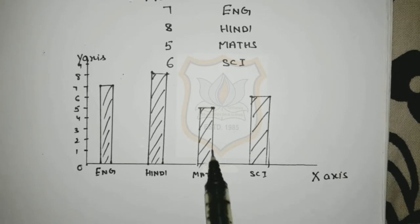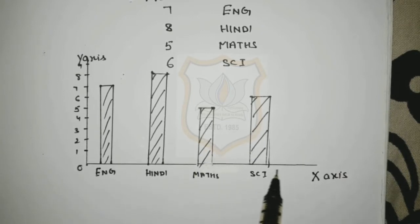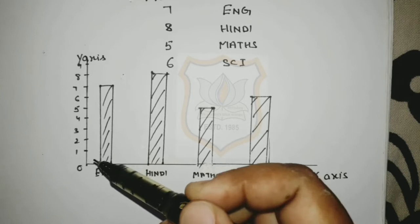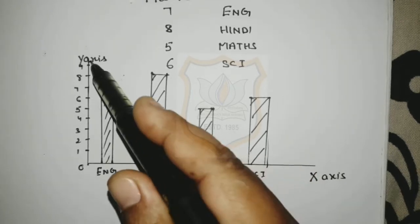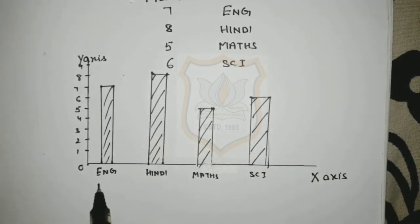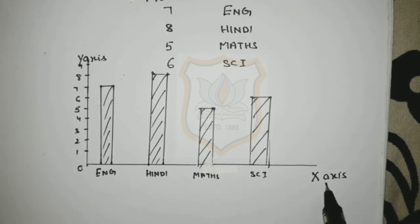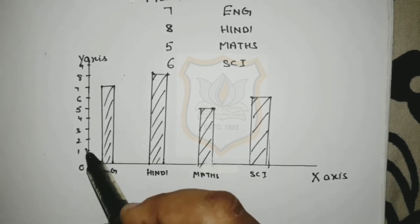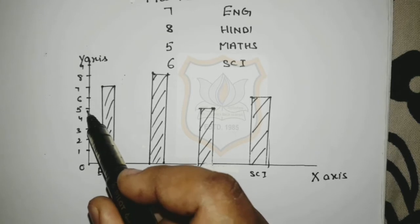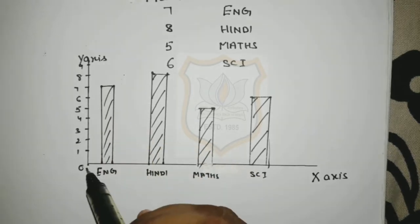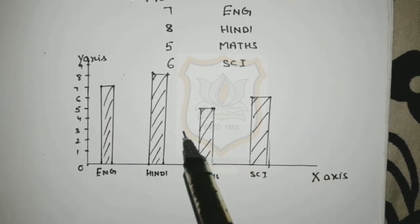Students, subject will be represented on the x-axis and marks will be represented on the y-axis. English, Hindi, Maths, and Science are represented on the x-axis, and marks — 0, 1, 2, 3, 4, and so on — are represented on the y-axis.